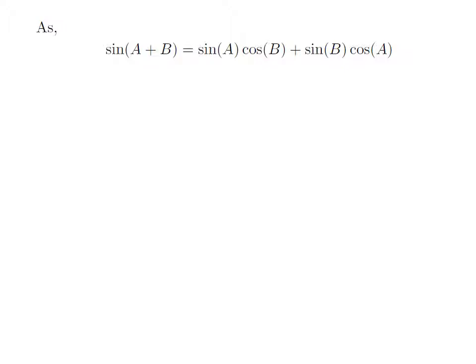As we know, the trigonometry identity sine of A plus B is equal to sine of A into cosine of B plus sine of B into cosine of A.